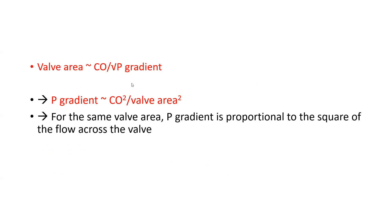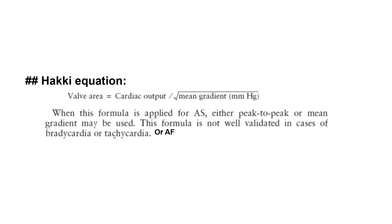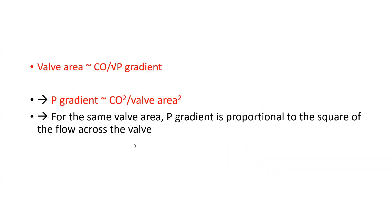I will describe two very important consequences of this equation — beyond knowing the math, it has implications for hemodynamic understanding. Rearranging the Hackey equation: pressure gradient equals cardiac output squared divided by valve area squared. This is extremely important: for the same valve area, if you double cardiac output, you quadruple the pressure gradient. If you halve cardiac output, you reduce the gradient by four. This explains why the pressure gradient is so dependent on cardiac output.